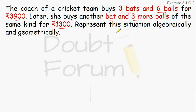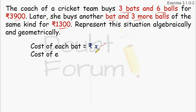First of all, we will assume that the cost of each bat is X rupees. Similarly, the cost of each ball is Rs. Y. So we are assuming that X and Y are the cost of each bat and each ball respectively.